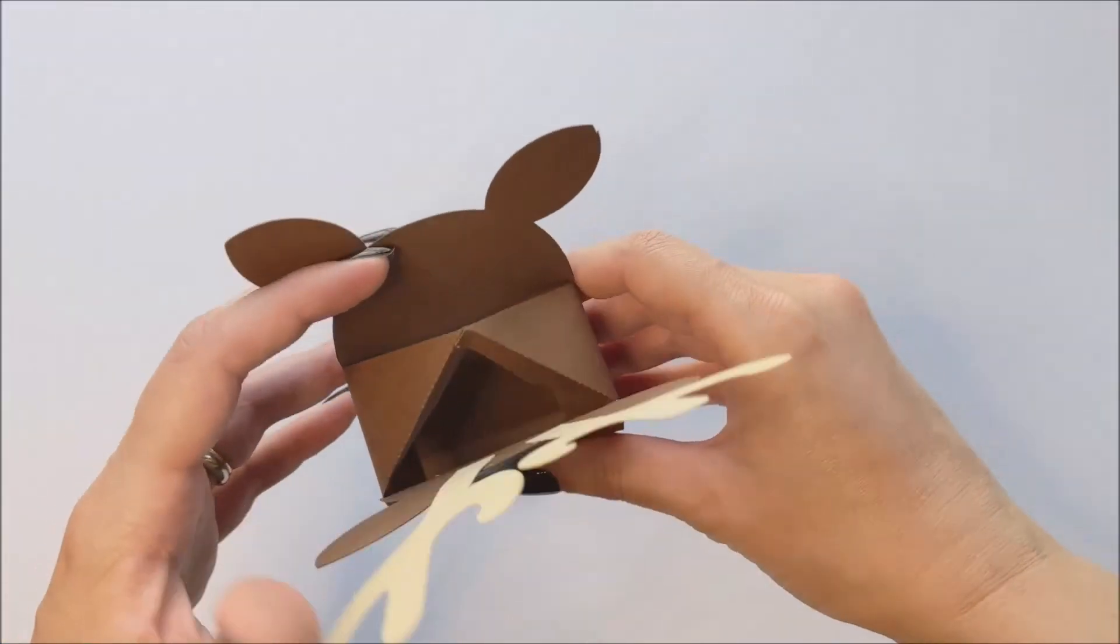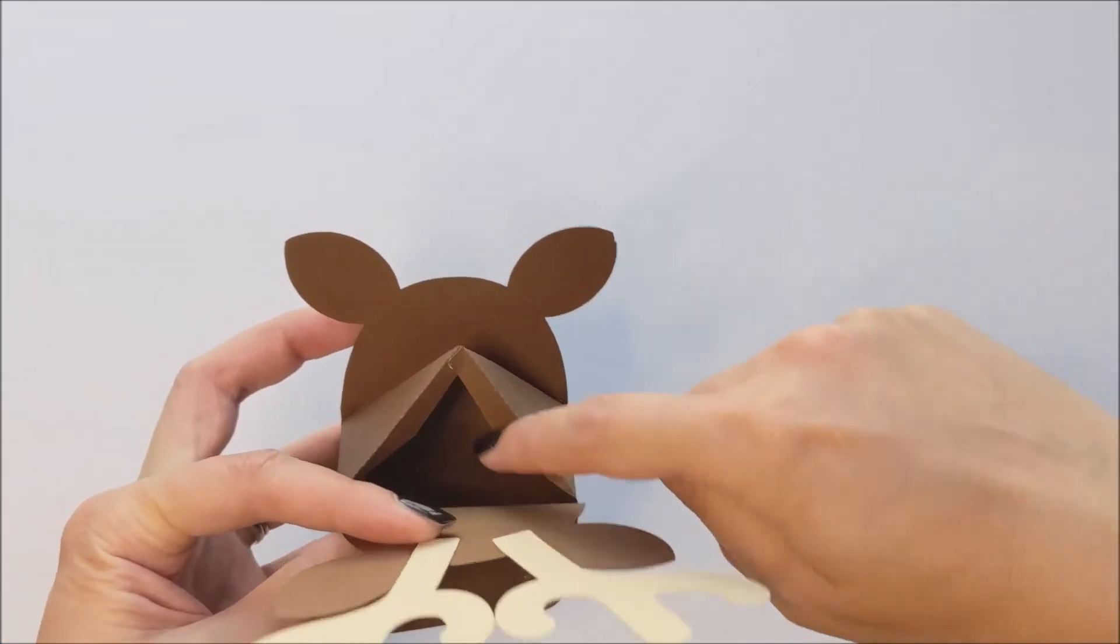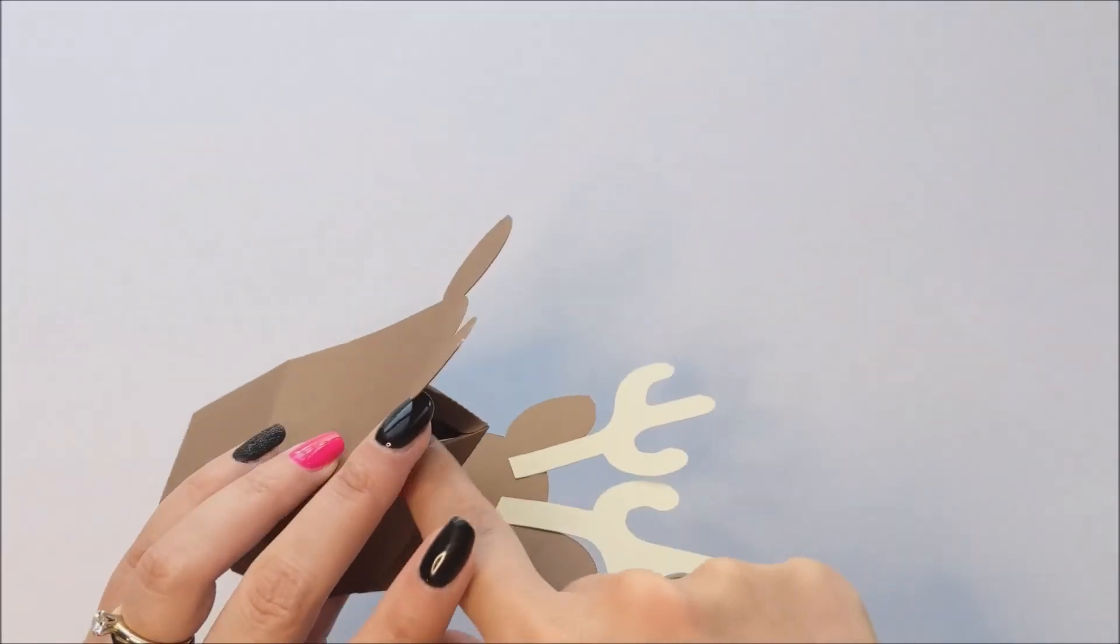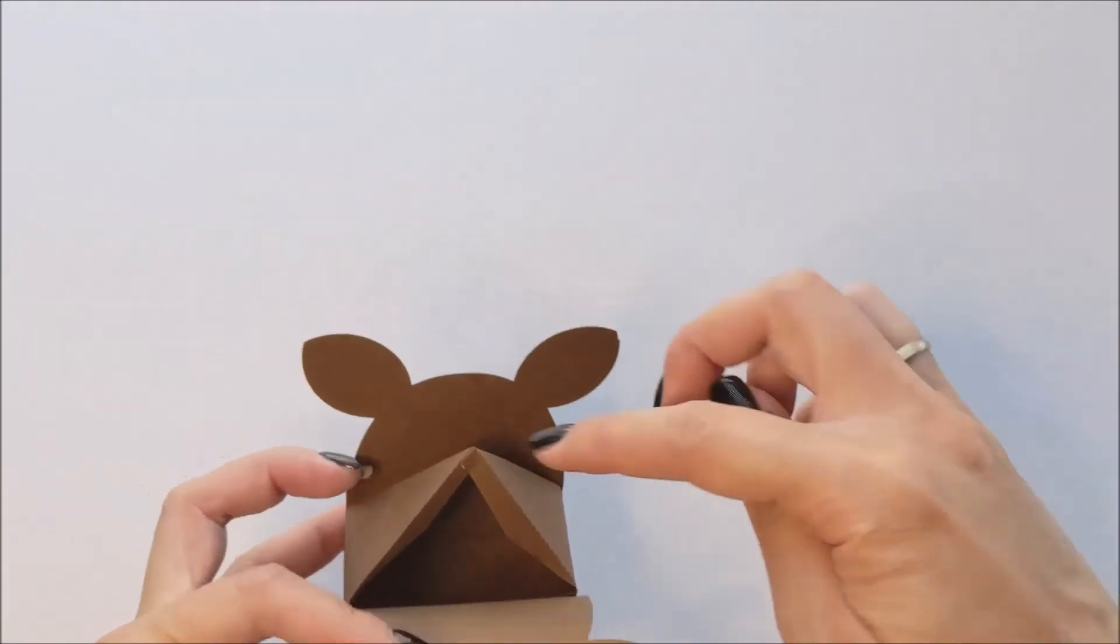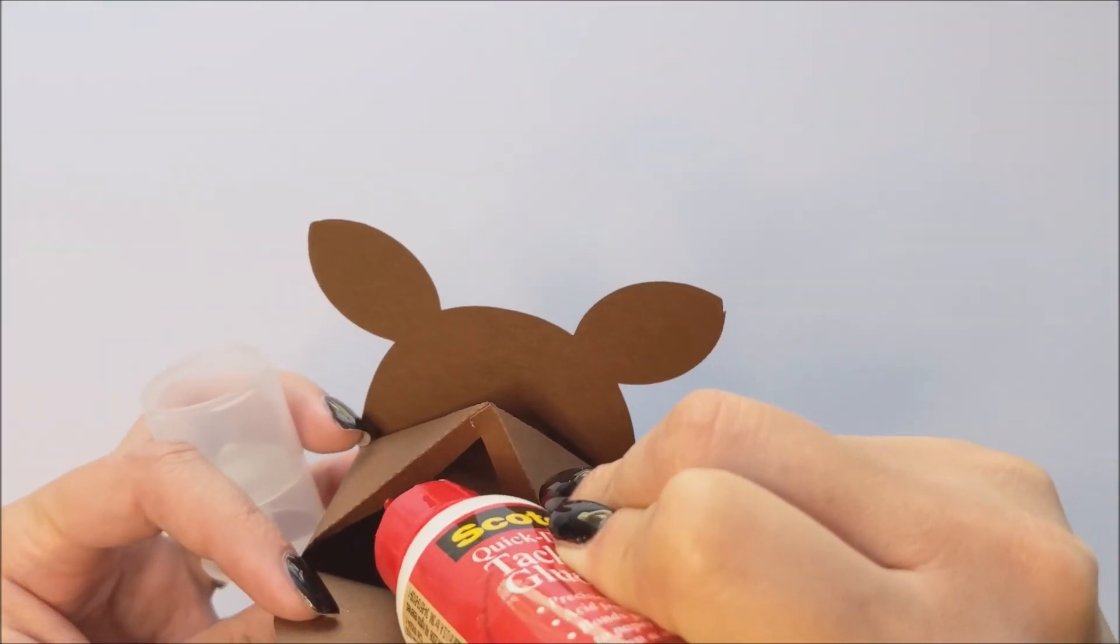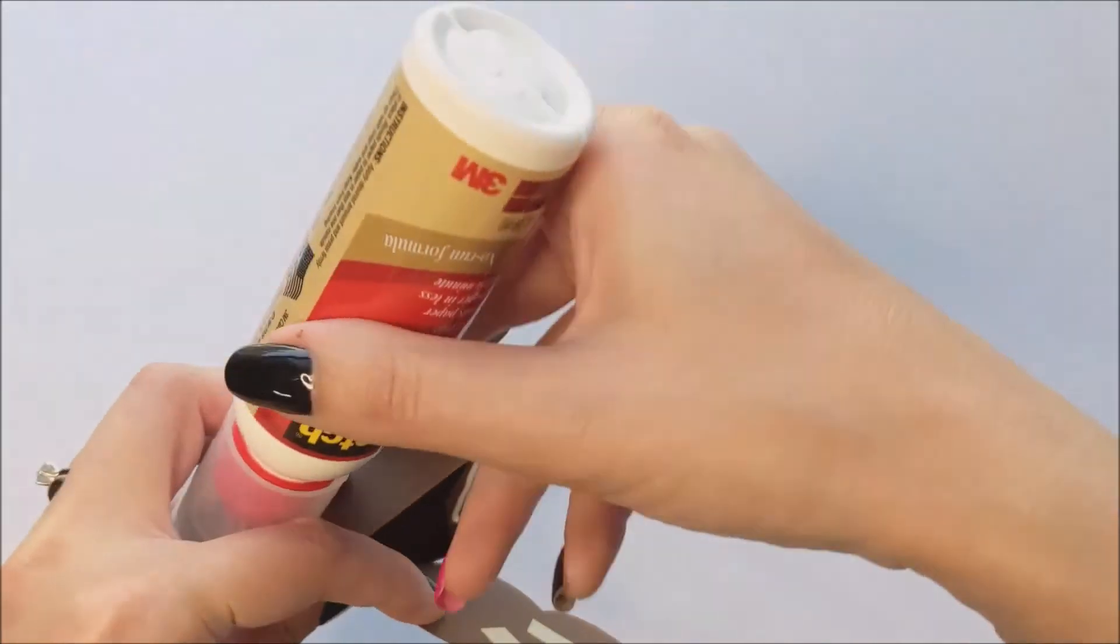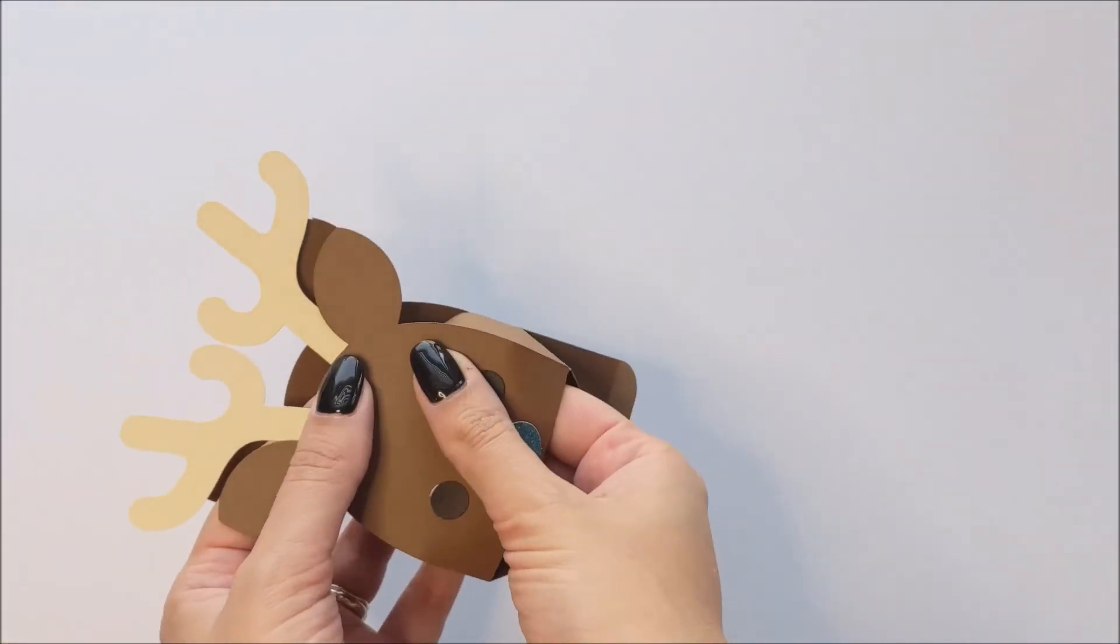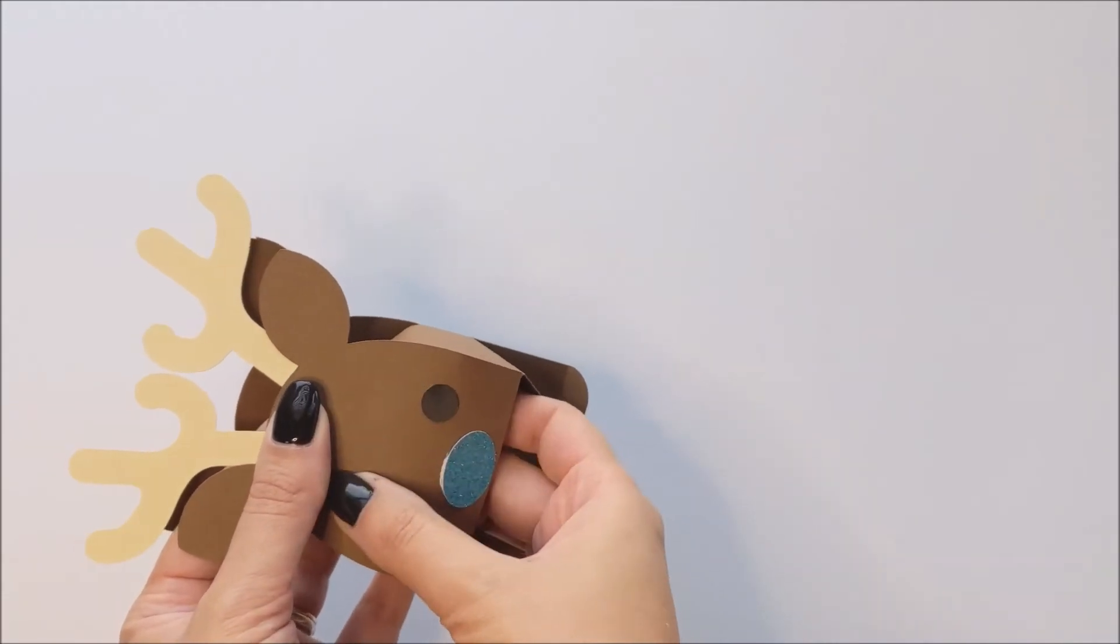All right. Now that the points are glued together, I can place glue along these tabs at the front and at the back. I'm going to start with the front. And then I can press my front against those glued tabs.